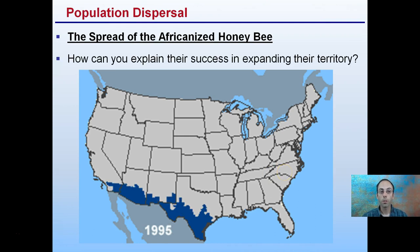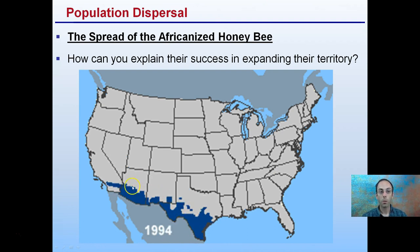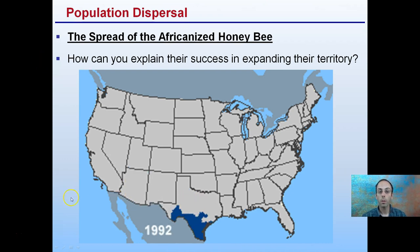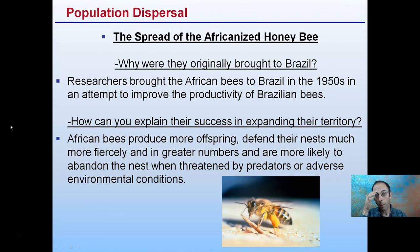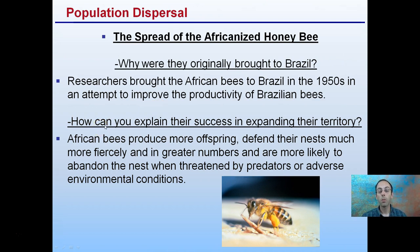Looking at population dispersal, we're looking at the spread of the Africanized honeybees. We see them evident here in Texas and then spreading outwardly. How can you explain their success in expanding their territory? Researchers brought the Africanized honeybees to Brazil in the 1950s in an attempt to improve productivity of the Brazilian bees. They were originally brought with good intentions, but they've expanded well beyond that — moving into Mexico, then into Texas, and into the southern regions of the United States.